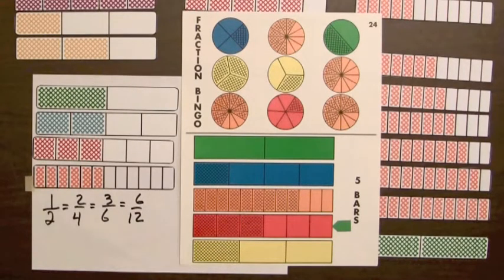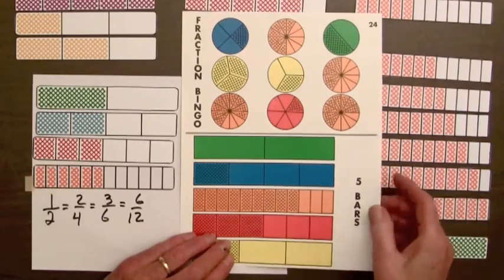To continue this idea, you could have students find two bars with the same shaded amount and write their equality.